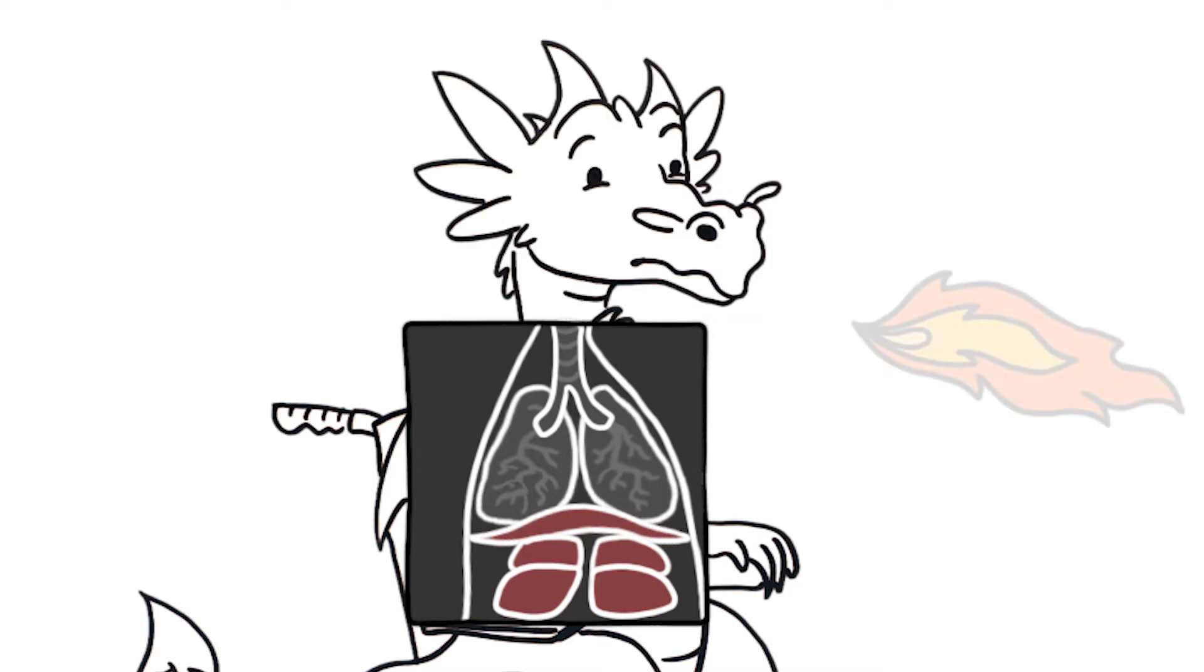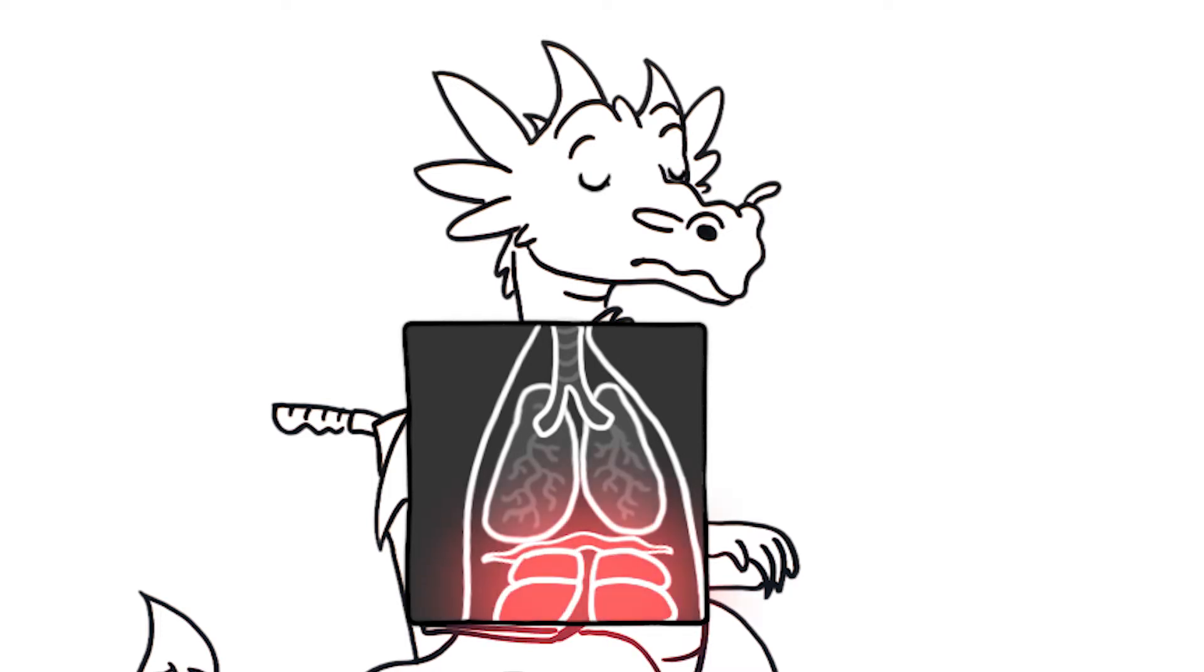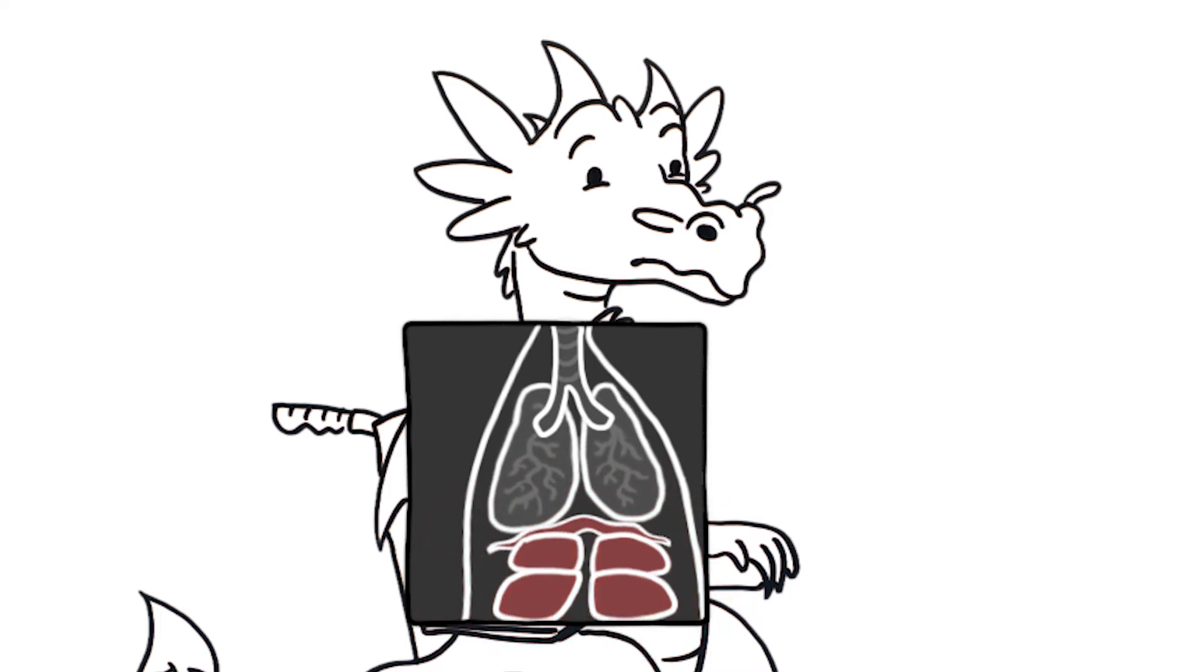If any of the three steps don't work, your cough will not be effective. The diaphragm is the main muscle used for breathing in. In Duchenne, the diaphragm gets weak, which limits deep breathing. The muscles in the abdomen are the main muscles used for breathing out. These also become weak, limiting forceful expiration.